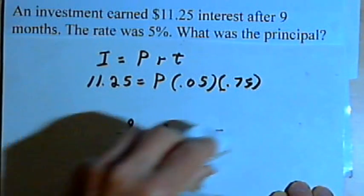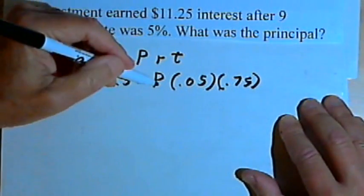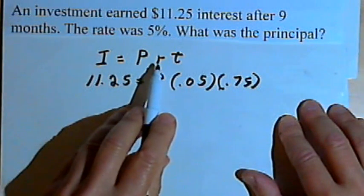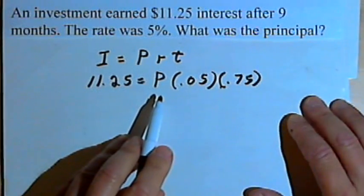So now what we've got is $11.25, that was the interest, equals the principal times 0.05, that's the rate, times 0.75, which is the time. And now we just have to solve for P.